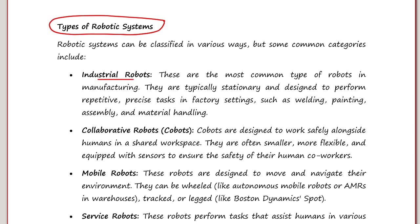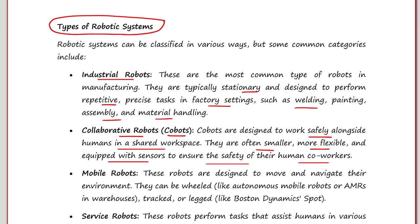Some common categories include industrial robots — these are the most common types in manufacturing, typically stationary and designed to perform repetitive or precise tasks in factory settings such as welding, painting, assembly and material handling. Next are collaborating robots, also known as co-bots. These are designed to work safely alongside humans in a shared workspace and are often smaller, more flexible and equipped with sensors to ensure the safety of their human co-workers.